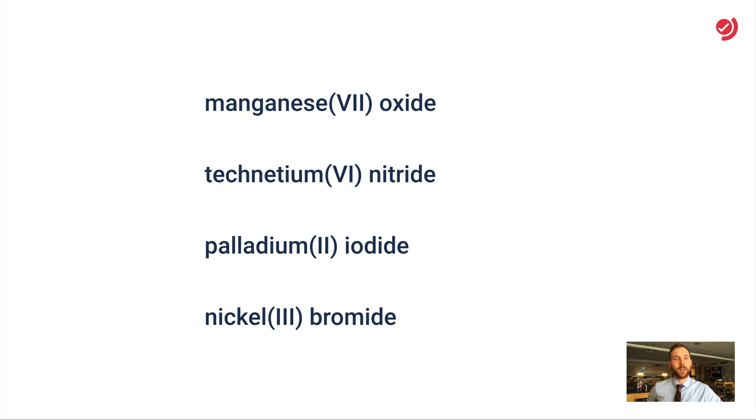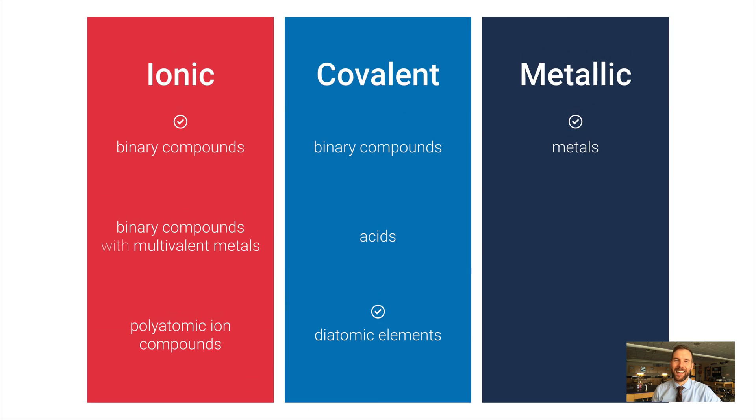Try these on your own. Pause the video and see if you have the right answers for the formulas. Manganese(VII) oxide is Mn₂O₇. Technetium(VI) nitride is Tc₃N₂—why? Well, Tc is plus 6, N is minus 3, so I need two minus 3s to balance that plus 6 charge. Third one, palladium(II) iodide is PdI₂. Finally, nickel(III) bromide is NiBr₃. Bromide has a minus one charge just like iodide, so the charge of the metal becomes how many of the nonmetal you need.